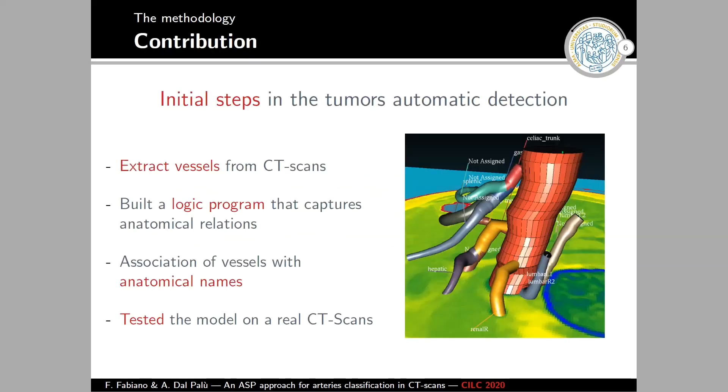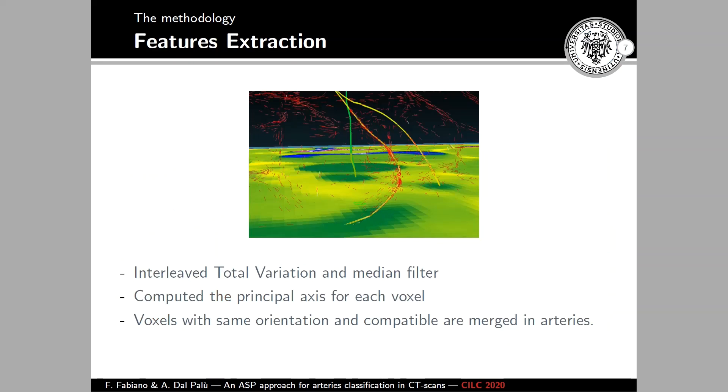Okay, now we are ready to introduce the actual contribution of the paper. This paper tried to formalize the initial step in the tumor automatic detection. What we did, we took the CT scans data and we extracted the vessels from there using image elaboration. And then we built a logic program using ASP that tried to classify this vessel. And then we associated this vessel with names and we tested the models on real CT scans.